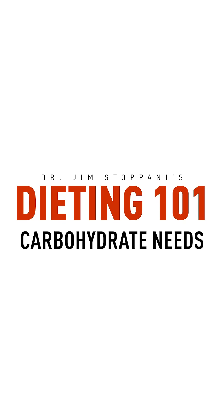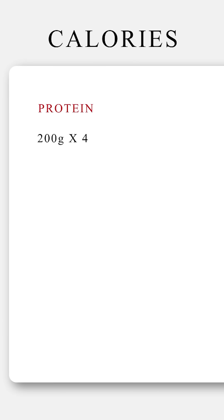It's time to figure out our carb needs based on our energy or calorie requirements. First, we'll need to figure out how many calories are coming from our protein and fat. Because we know that there's four calories per gram of protein, and our 200 pound athlete is consuming 200 grams of protein, that means he's getting 800 calories from protein each and every day.